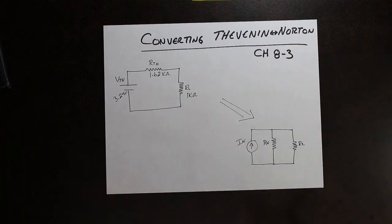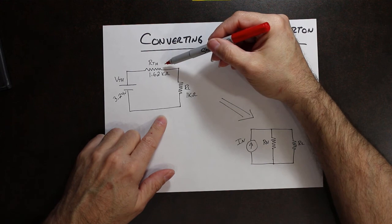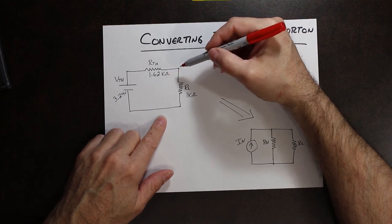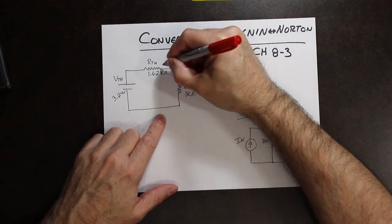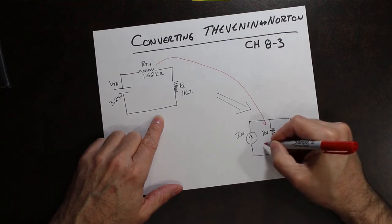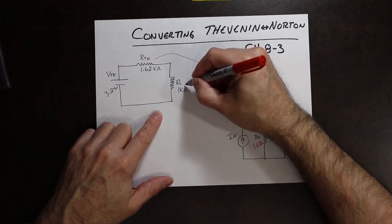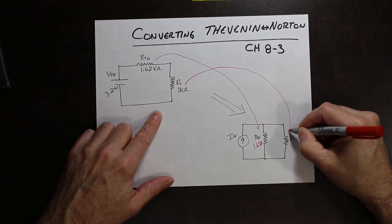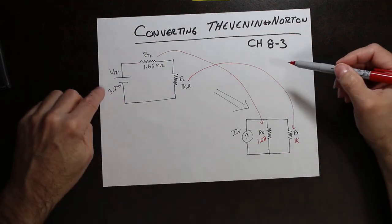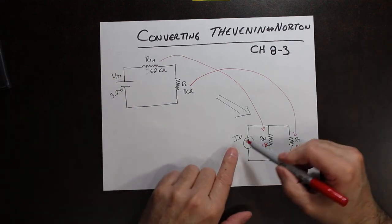R_Thevenin and R_Norton are the same value — the same calculation, the same procedure. So we're going to take this value of R_Thevenin and drop it right here for our Norton: 1.62kΩ. The load value is the same as well — we're going to take the load value and drop it right here: 1kΩ. Now what we need to do is convert Thevenin's voltage into Norton's current.